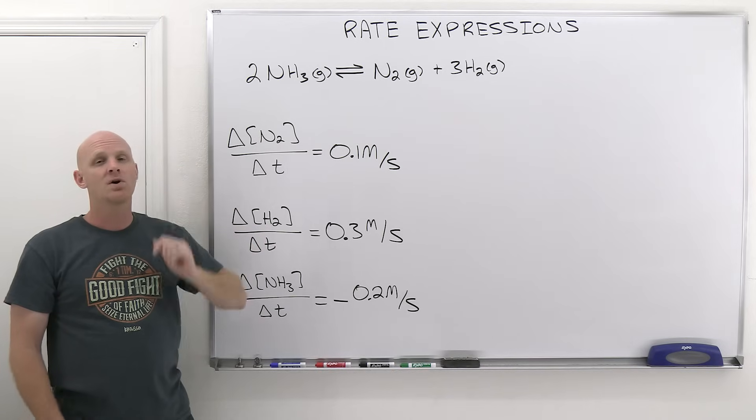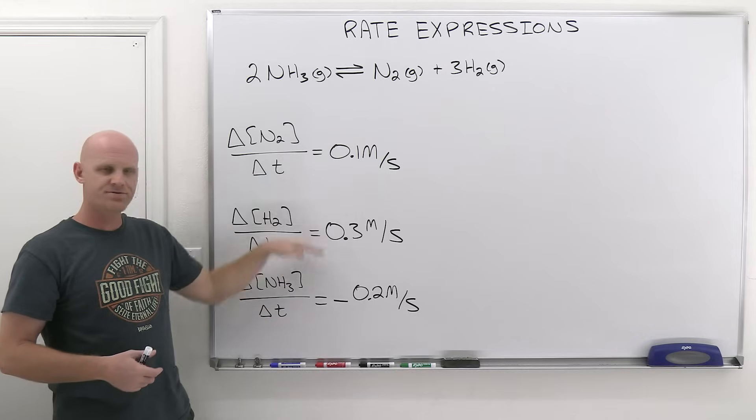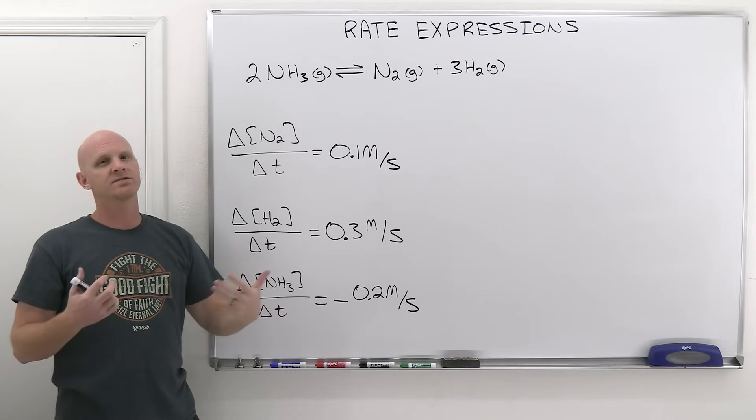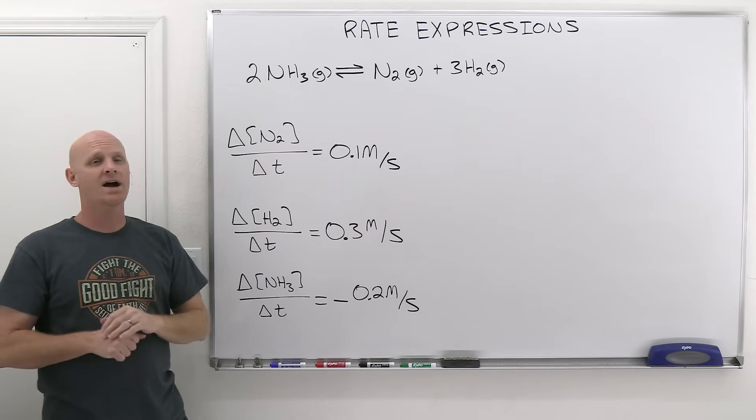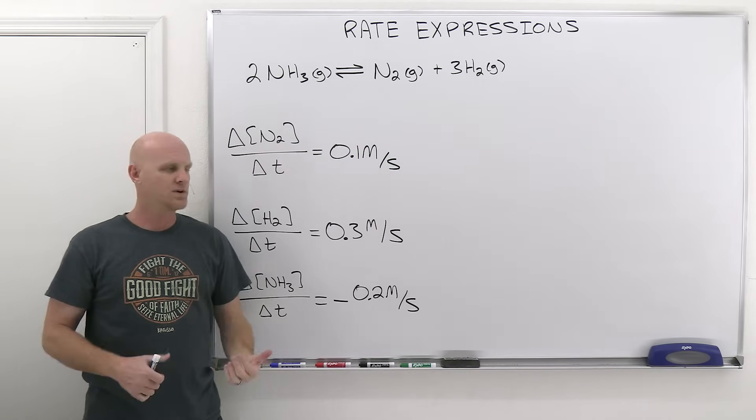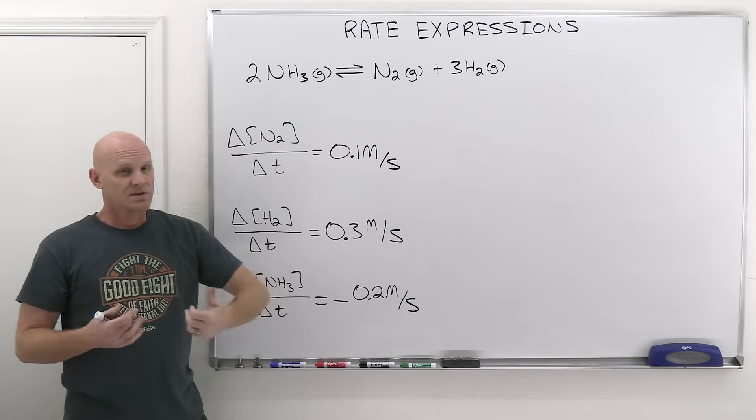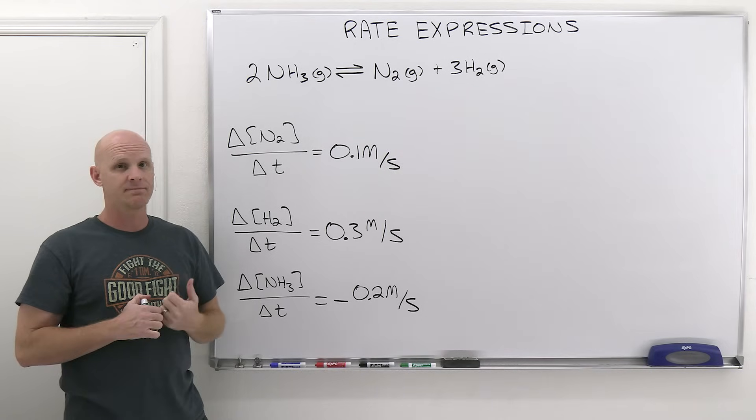However, there's something called the rate of reaction. There's only one rate of reaction, not three. So we've got to figure out what is this rate of reaction? Well, it turns out this rate of reaction is 0.1 molar per second. But how do we get there and why is it that way?